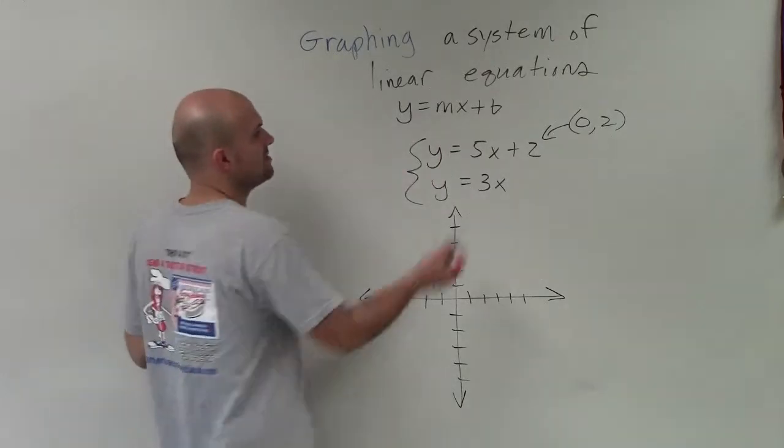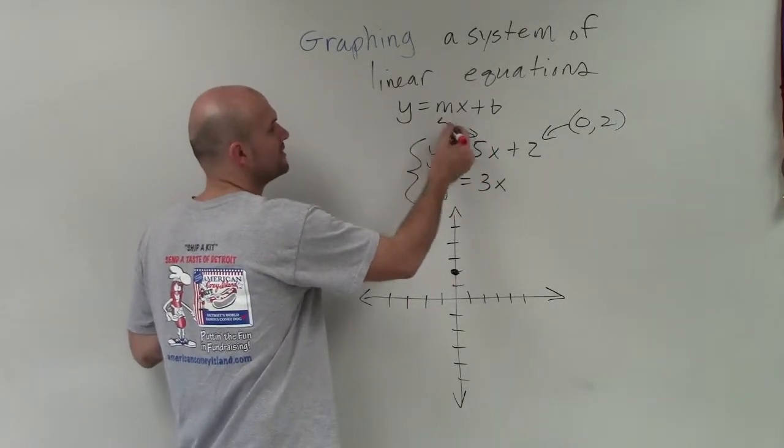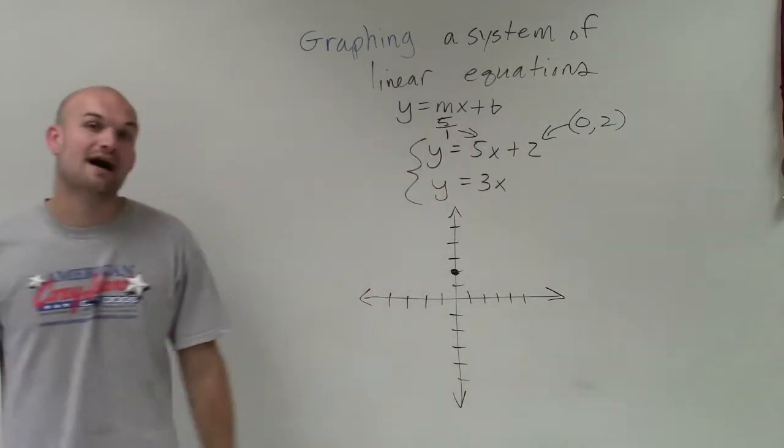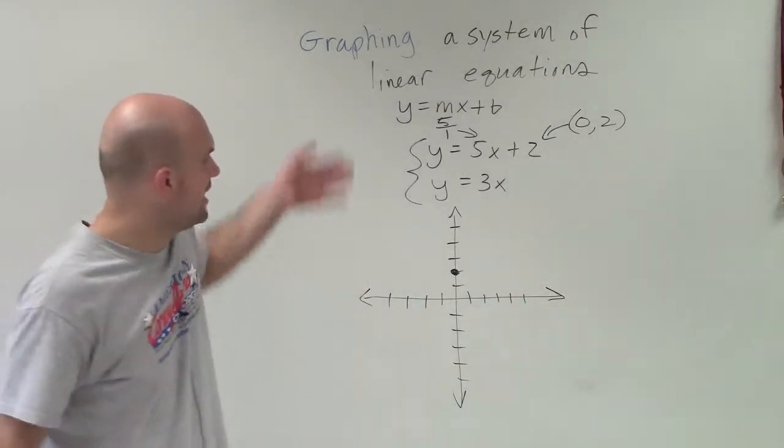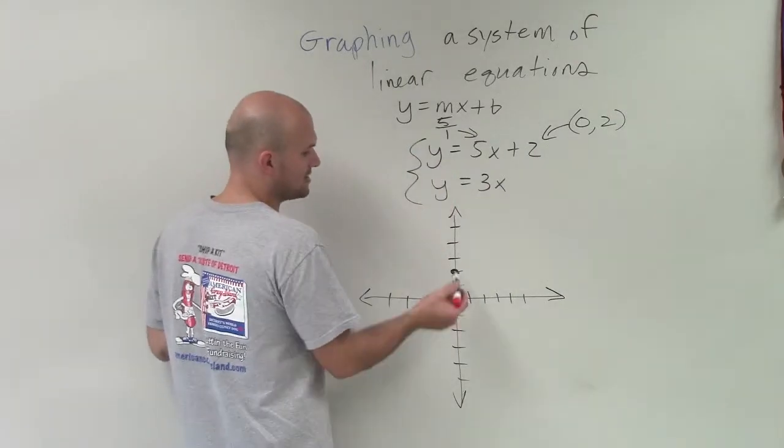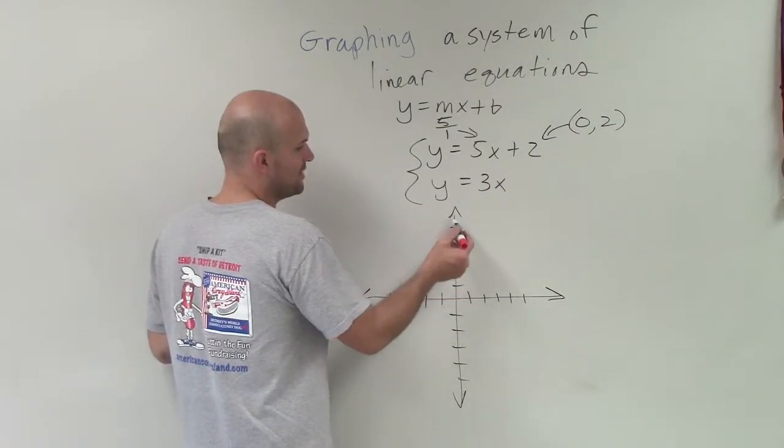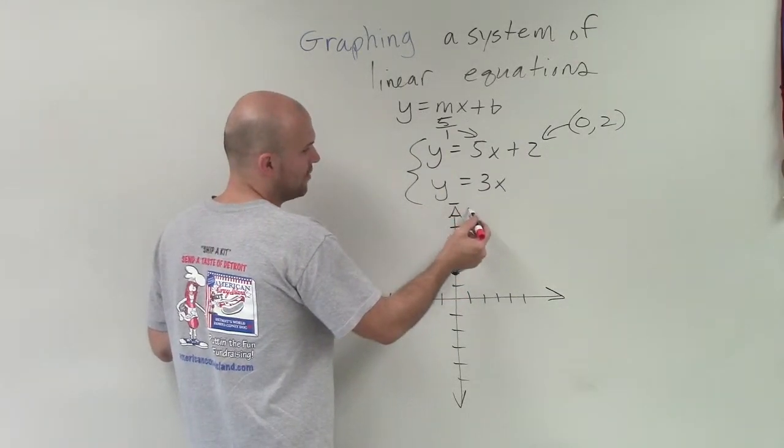Then over here is going to be my slope. Remember, slope we can write as a fraction of 5 over 1 if it's a whole number. You can apply the rise over run. So I'm going to go up 5, 1, 2, 3, 4, 5 over 1.